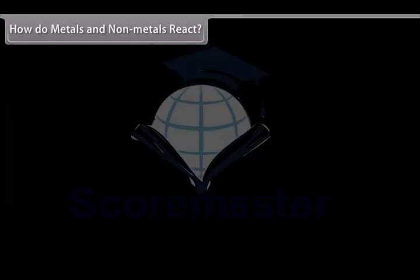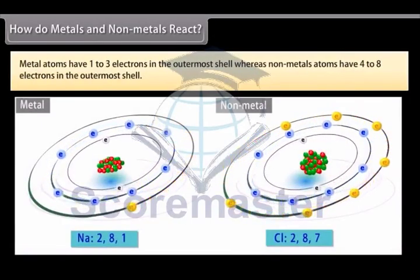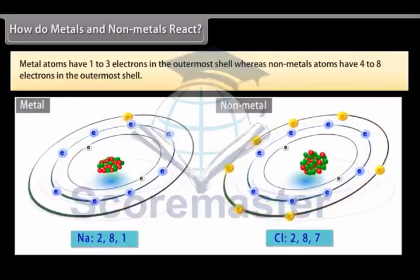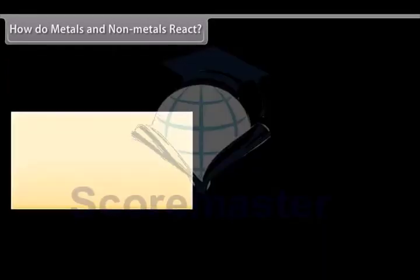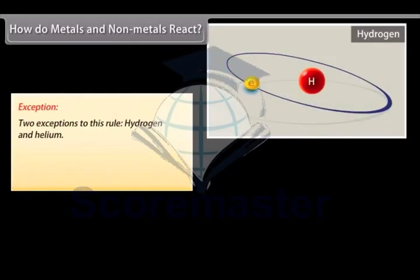How do metals and non-metals react? Metal atoms have 1 to 3 electrons in the outermost shell, whereas non-metals atoms have 4 to 8 electrons in the outermost shell. Exception. Two exceptions to this rule: Hydrogen and helium.